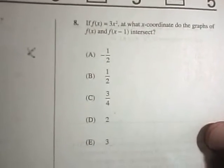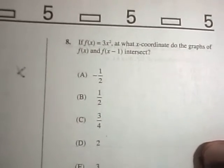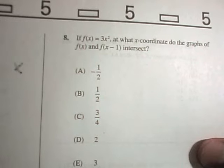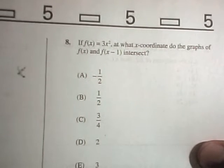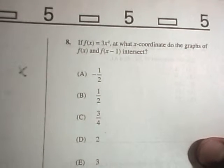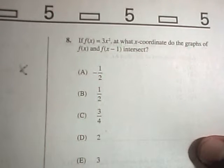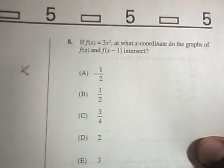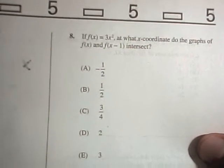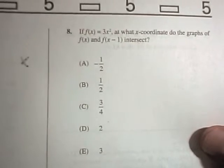Okay, and the next problem, it says if f of x equals 3x squared, at what x coordinate do the graphs of f of x and f of x minus 1 intersect? So there's a couple different ways you could do this problem. You could graph each of these and look where they cross. You could do algebra. I think probably the easiest thing to do on this problem is just plug and chug.